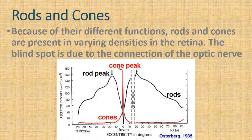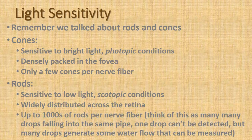Because of their different functions, rods and cones are present in varying densities in the retina. The blind spot is due to the connection of the optic nerve. Cones are sensitive to bright light (photopic conditions) and are densely packed in the fovea with only a few cones per nerve fiber. Rods are sensitive to low light (scotopic conditions) with up to one hundred rods per nerve fiber — think of many drops falling into the same pipe: one drop can't be detected, but many drops generate a flow that can be measured.